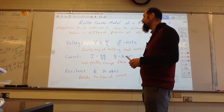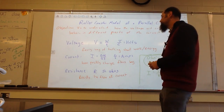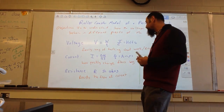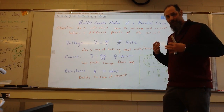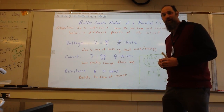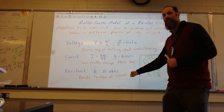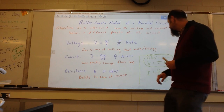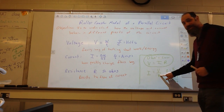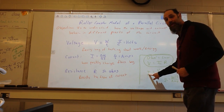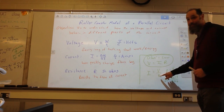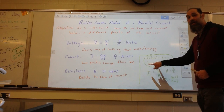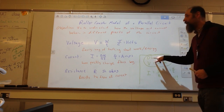Just as a reminder for terminology: voltage is our fancy way of talking about work and energy. Current describes how quickly the charge flows, and resistance resists the flow of current. If it's a good conductor it has really small resistance and therefore the current would be large. If it's a bad conductor it has large resistance so the current would be small. That all comes from Ohm's Law.